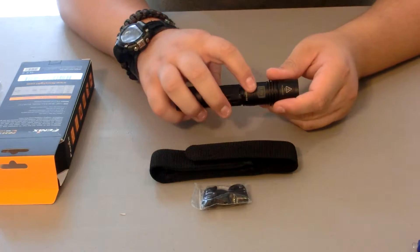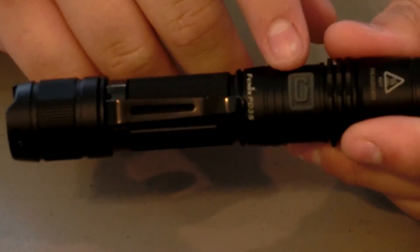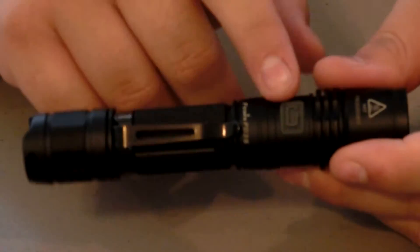It comes right off. And right here, which is what I like, this little gray button, you press it and it changes the modes. There's five modes of brightness on here and then it also has strobe.